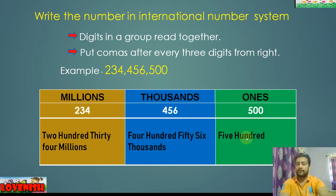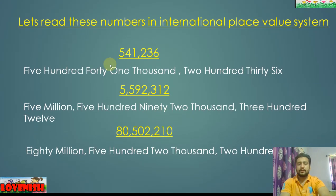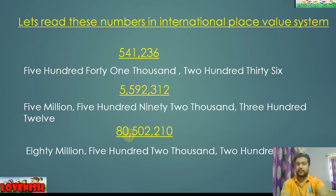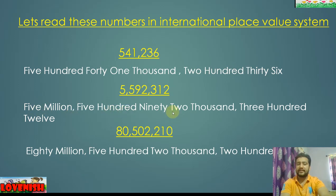For example, the number 234,456,500 — let us read this. There is a group of millions, a group of thousands, and a group of ones. In the international place value system, commas are placed after every three digits. For example: 541,236 and 5,592,312.